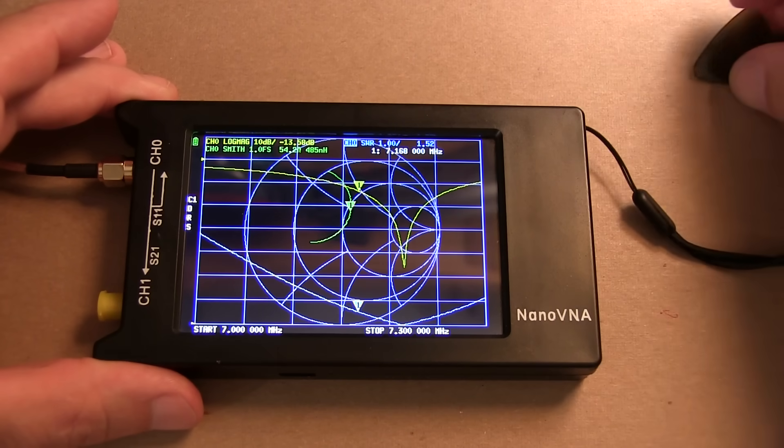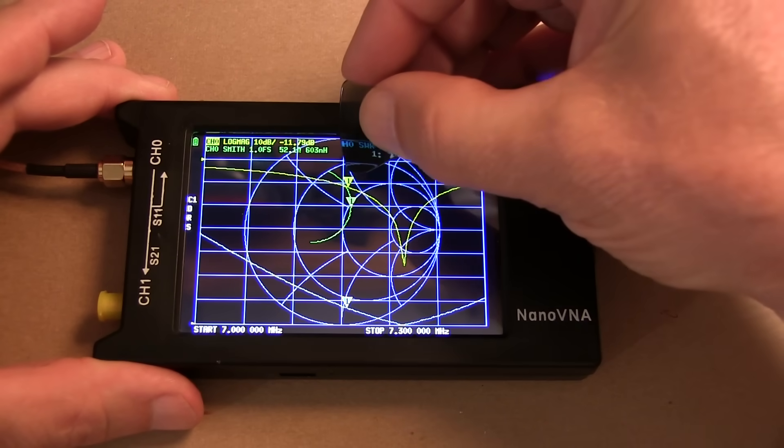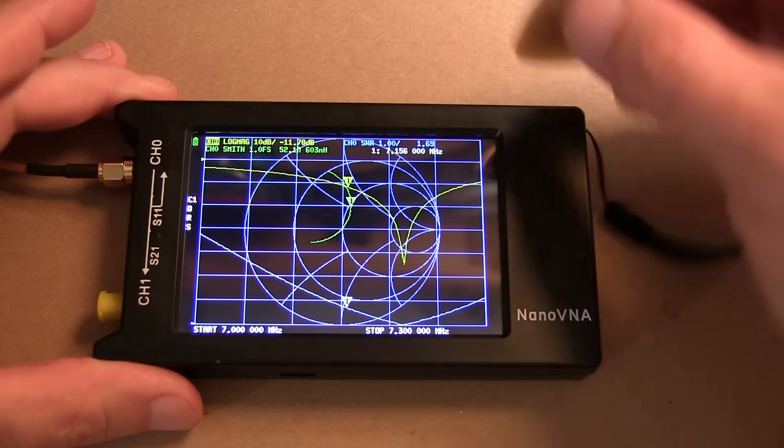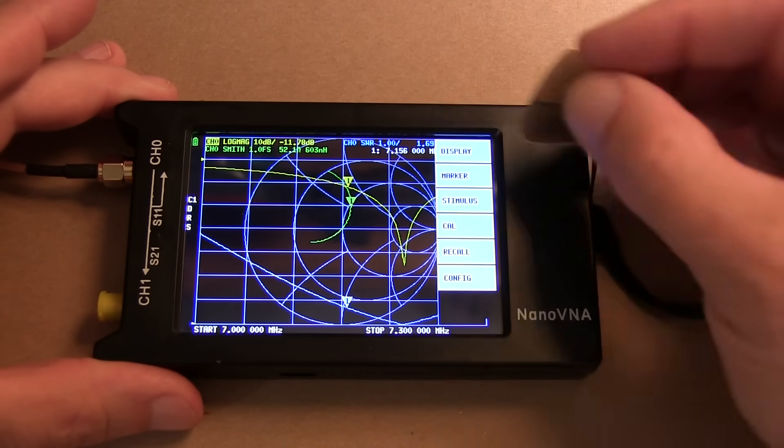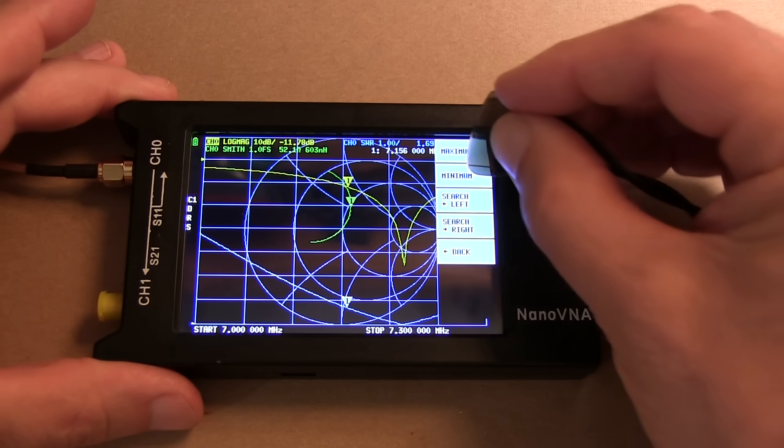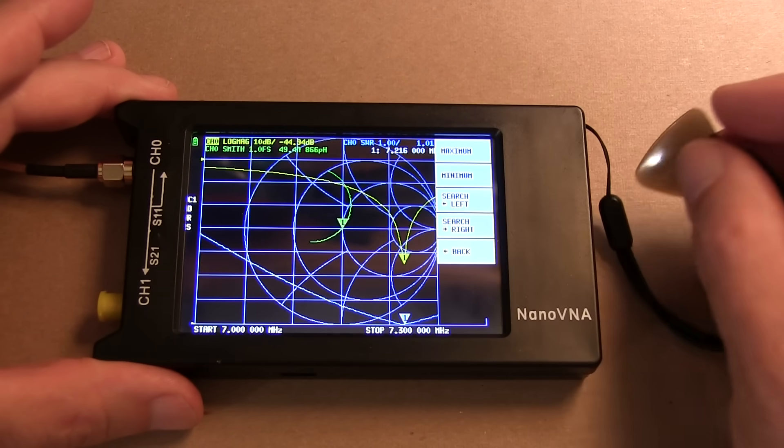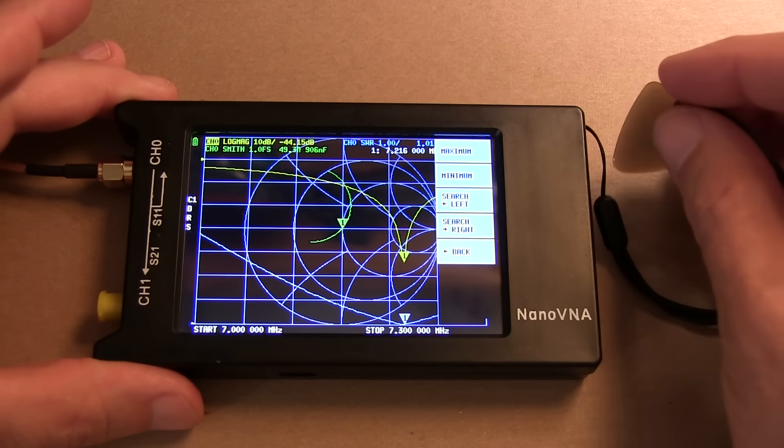Or we even have some marker functions to search for a min or a max. So for example, if I touch on marker number 1, that activates trace number 1, and I can go into the marker function and do a search and search for a minimum, and that will put the marker right at the minimum, and I can see that's at 7.216 MHz.